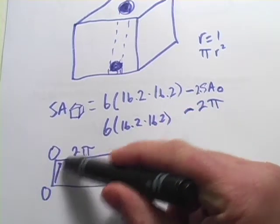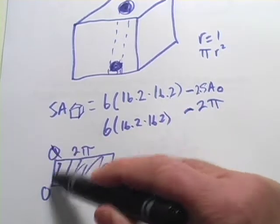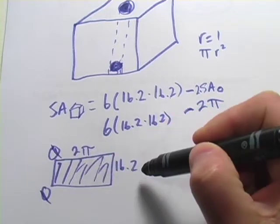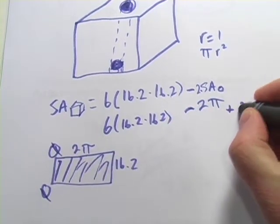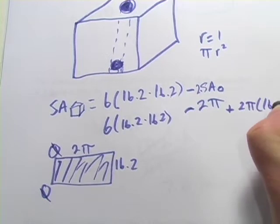So we need to add this area. Don't need to worry about the circles because they're not there. 2 pi times 16.2. So plus 2 pi times 16.2.